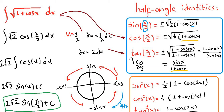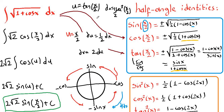You could reach the same answer using the tangent of x over 2 form. In that case, you would let u equal tangent of x over 2, and du would be secant squared of x over 2 times one half. Rewriting using trigonometric identities gives 1 over (1 plus cosine of x). You then substitute in terms of u and solve, still obtaining 2√2 · sin(x/2) + C. However, this path is a bit longer, so I recommend using the cosine half-angle approach.